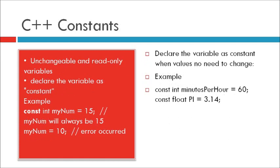C++ constants. When you do not want others or yourself to override existing variable values, use the constant keyword. This will declare the variable as constant, which means unchangeable and read-only. For example, const integer myNumber equals 15. myNumber will always be 15 due to this line.